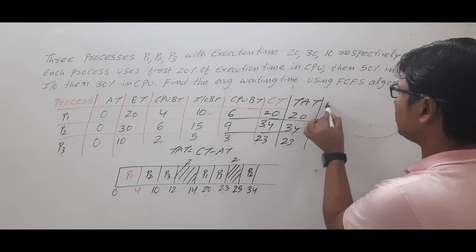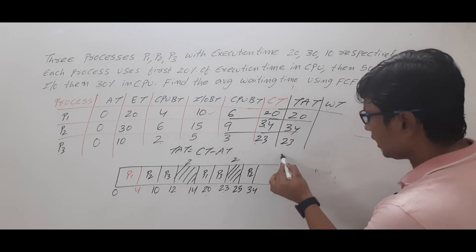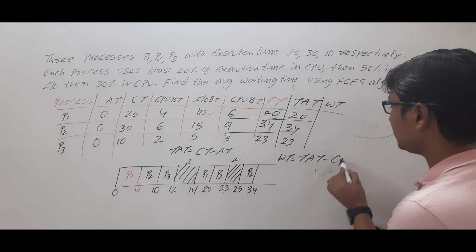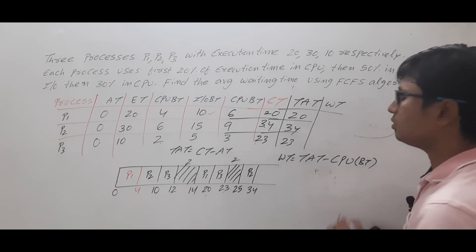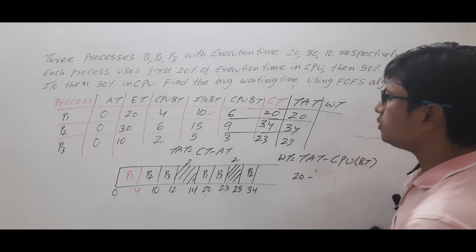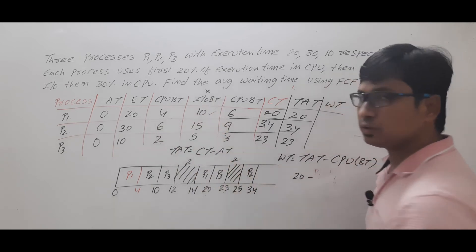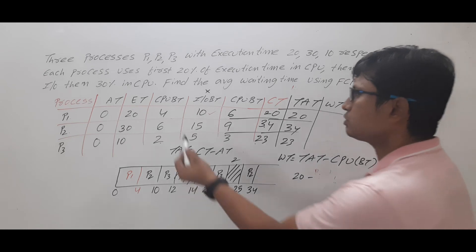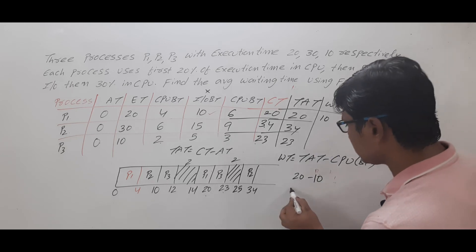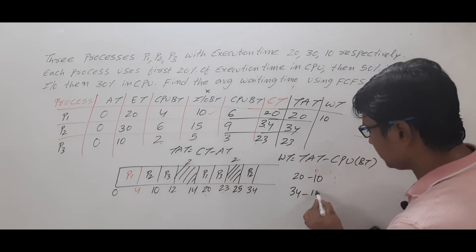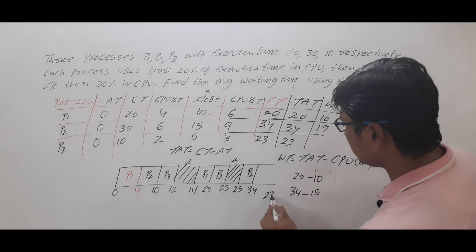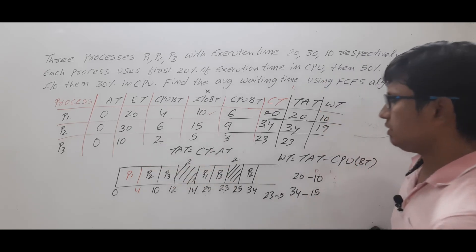Now we compute the waiting time. Waiting time equals turnaround time minus CPU burst time only — we do not count IO burst time. For P1: turnaround time is 20, CPU burst time is 4 plus 6 equals 10, so waiting time is 20 minus 10 equals 10. For P2: 34 minus (6 plus 9 equals 15) gives 19. For P3: 23 minus (2 plus 3 equals 5) gives 18.